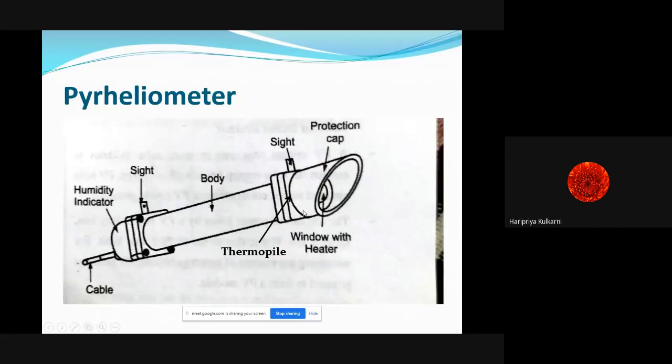This is a protection cap which will not allow any other radiation to enter inside the instrument. Only direct radiation will fall through this window and be sensed by a thermopile placed inside. The cold junction is maintained at a specific temperature, and temperature difference is converted into output signal collected from this cable. It measures direct radiation, so we have to move it along the sun rotation using the MPPT controller.